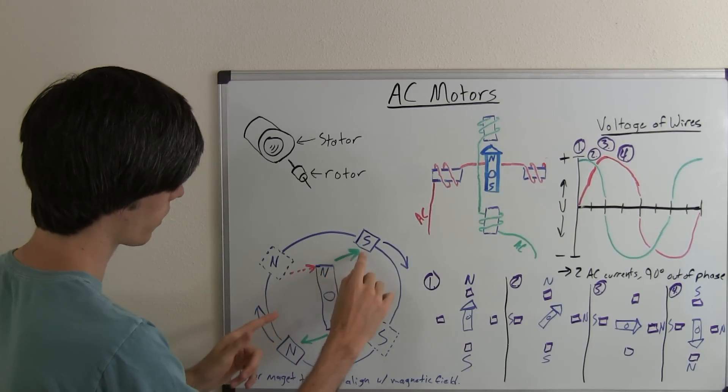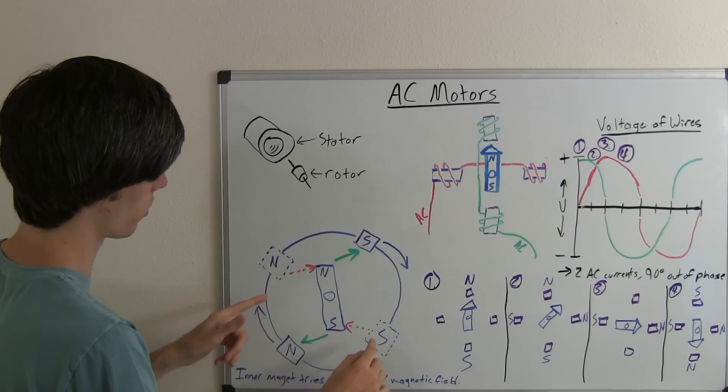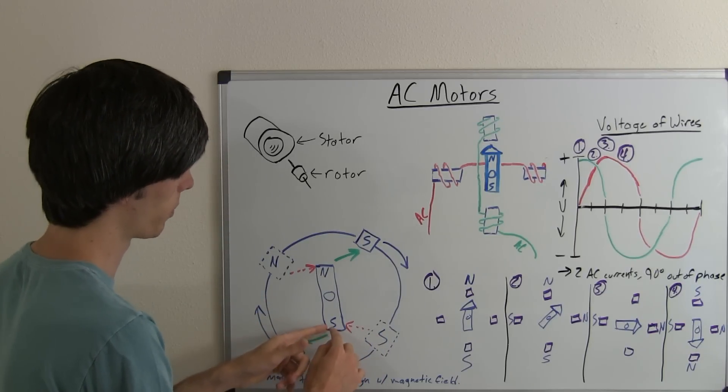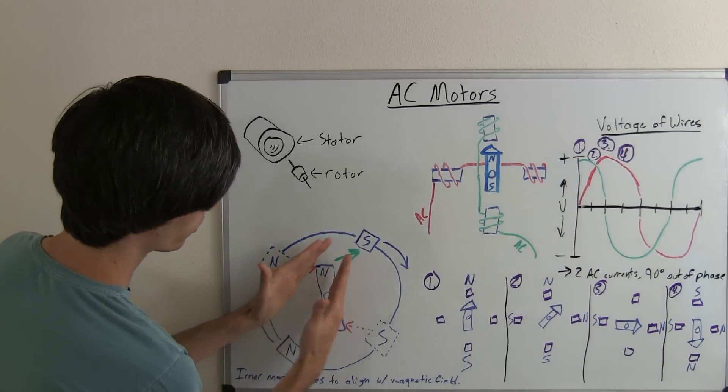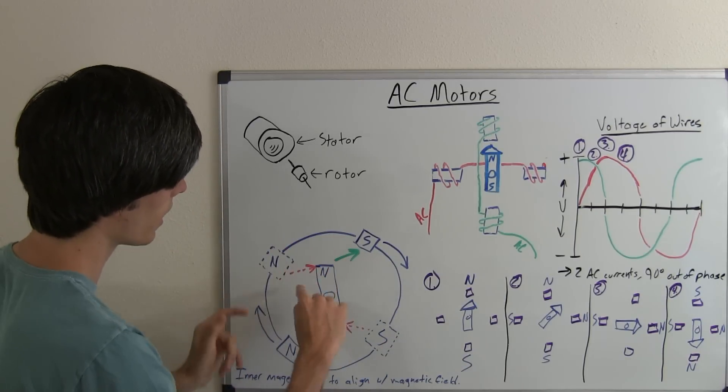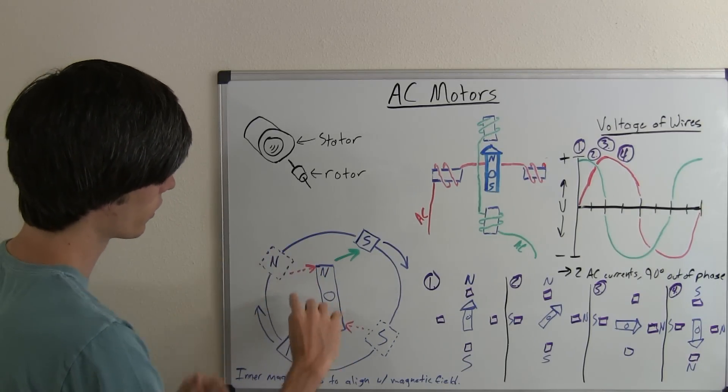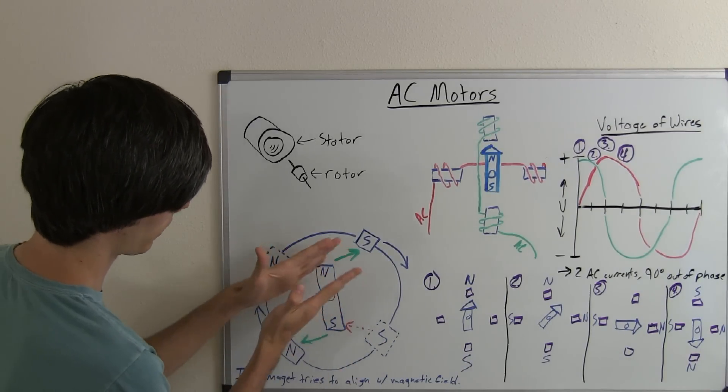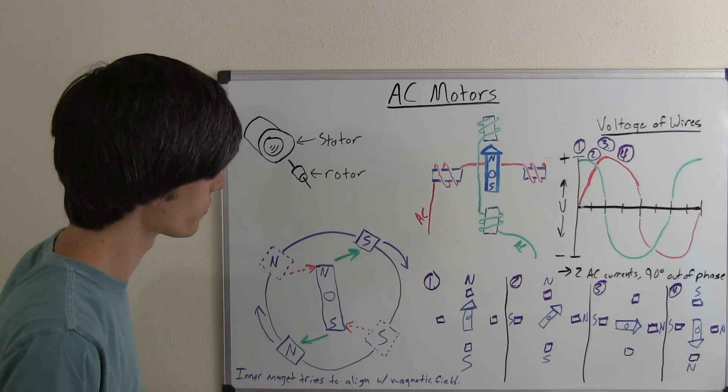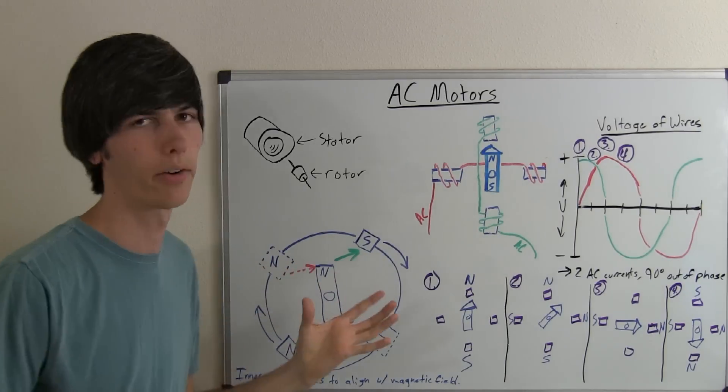So as it's rotating, the north is attracted to the south, the south is attracted to the north, and then the south repels the south, north repels the north, and so it tries to align itself. And as long as you never let it align, it's going to keep rotating to try and catch up and align itself with that rotation. So this is the basics of how an AC motor works.